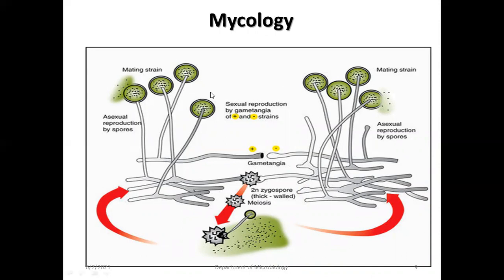The sporangium releases sporangiospores, which are held by columella development. These fungi also reproduce sexually by the formation of a single dark thick-walled spore called a zygospore. Sexual reproduction occurs by gametangia fusion of plus and minus thalli forming zygospores via zygosis. Asexually, they form sporangiophores bearing a sporangium filled with sporangiospores. On the basis of zygospore formation, this fungus is classified under the phylum Zygomycota.